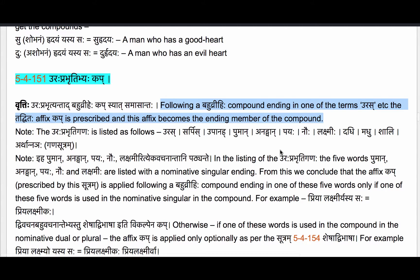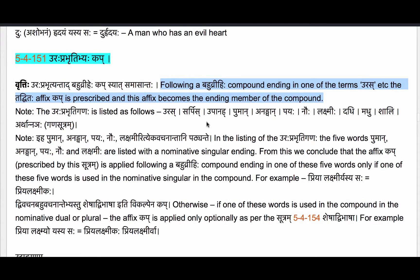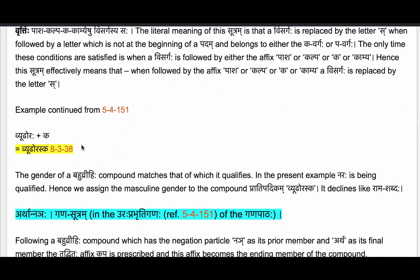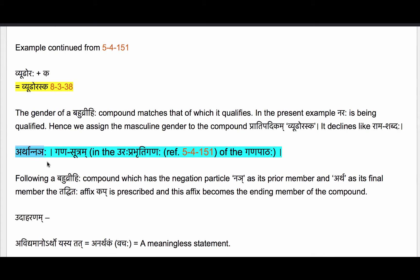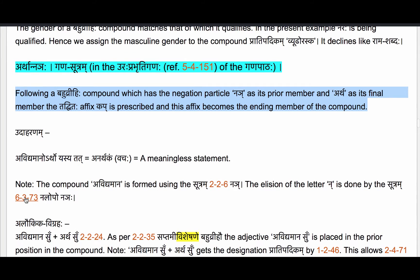Now in that Urafprabhrithi Ganaha there is a Ganasutram which reads Artha Naya, which is what we are going to take up now. The meaning is quite straightforward: following a Bahubrihi compound which has the negation particle Naya as its prior member and Artha as its final member, the Tadhythaha affix Kap is prescribed and this affix becomes the ending member of the compound.